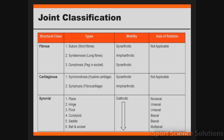Now that we have all the information, when asked to classify a joint we must reference each of the following sections: structural class, type, mobility, and axis of rotation. For fibrous and cartilaginous joints, we only need the first three sections. For synovial joints, we must also include the axis of rotation. For example, the distal tibiofibular joint would be classified as a fibrous, syndesmosis, amphiarthrotic joint. The pubic symphysis would be classified as a cartilaginous, symphysis, amphiarthrotic joint. The shoulder, as a synovial joint, would be classified as synovial, ball and socket, diarthrotic, multiaxial.